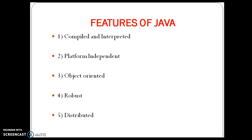The first feature is compiled and interpreted. If you take any language, it can be either compiled or interpreted. For example, C language is a compiled language. JavaScript and VBScript are interpreted languages. C++ is a compiled language.